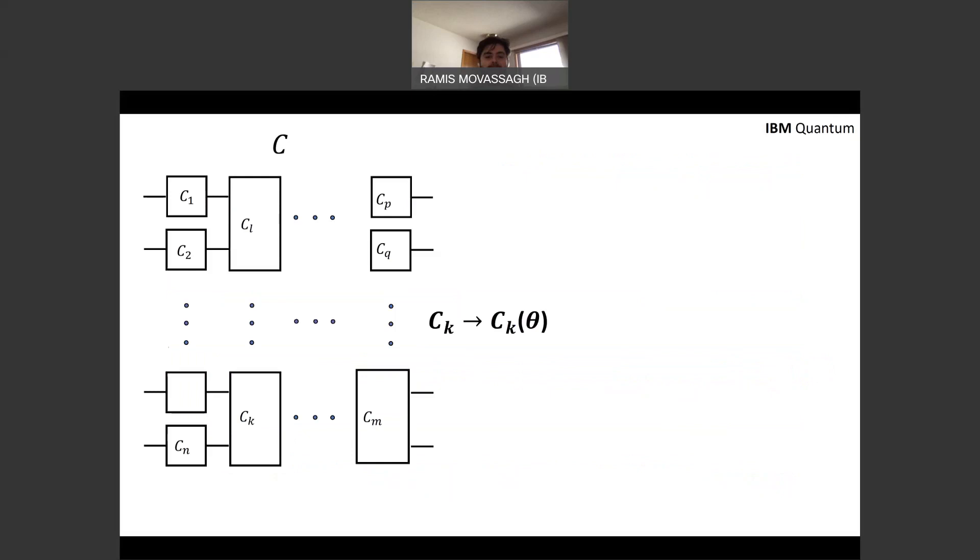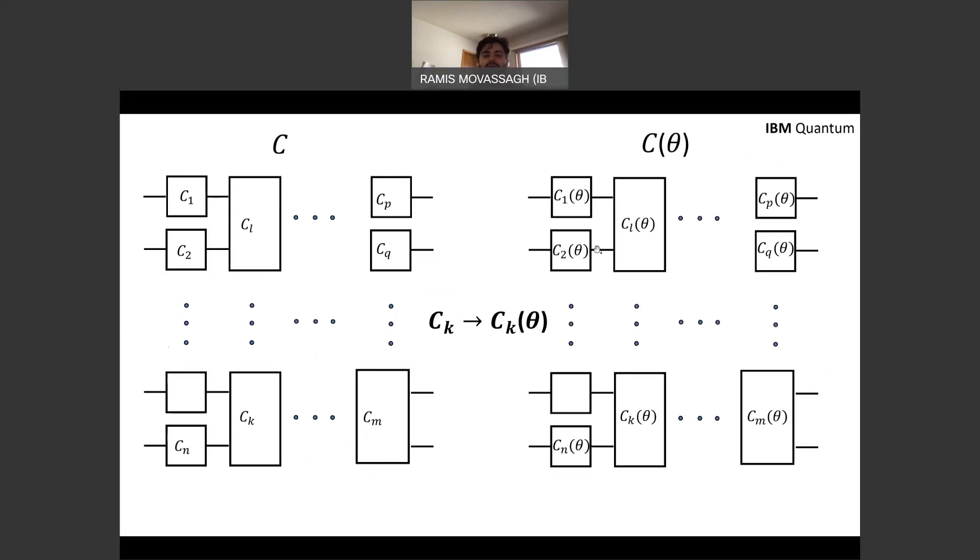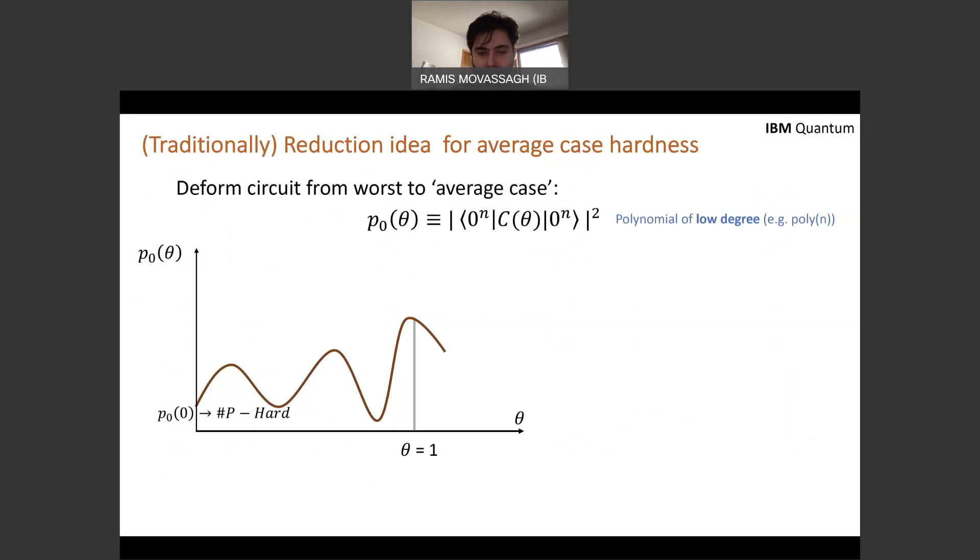So average case hardness, how does it work? The idea is that you want to reduce the worst case circuit hardness. So there exists some circuits for which they're very contrived. We have Sharp-P hardness results. You want to deform the gates, find a path, a parameterized path, with respect to theta that takes it from worst case to average case. And then use that hopefully to reduce the worst case hardness to average case. But let me tell you how that works. I think the original idea goes back to Lipton.